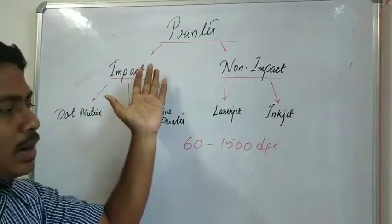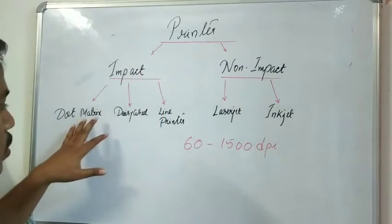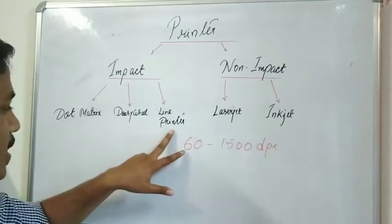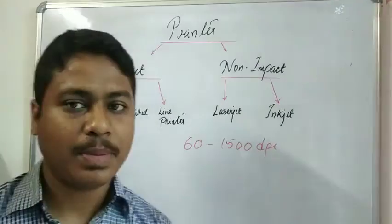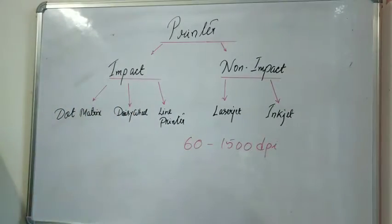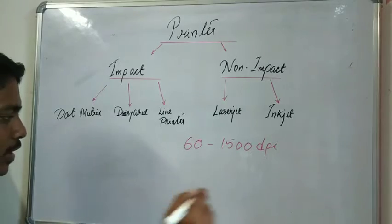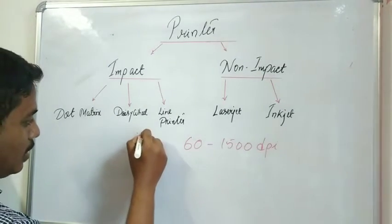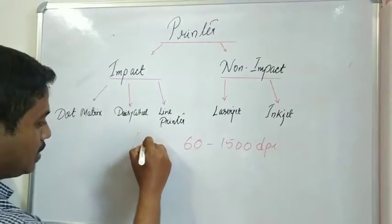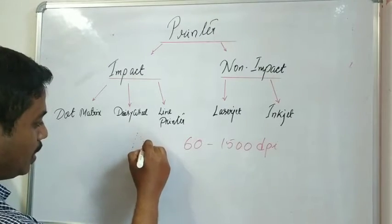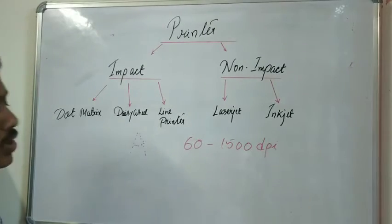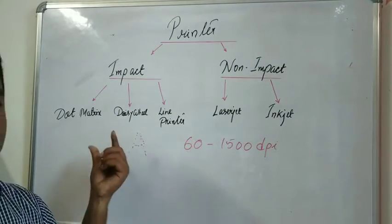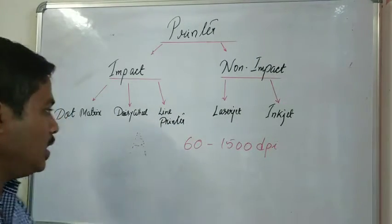Examples of impact printers include the dot matrix, daisy wheel, and line printer. The dot matrix printer forms letters as a pattern of dots. When you type, the letters are formed in the shape of dots on the paper — for example, the letter A is made up of dots as seen in the output.